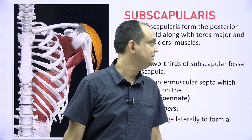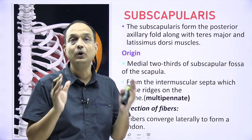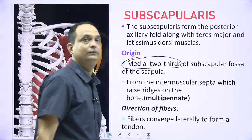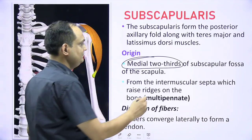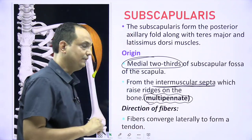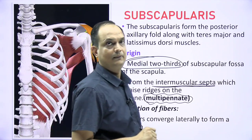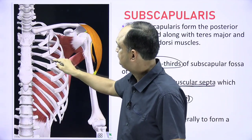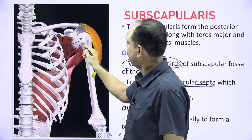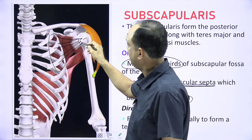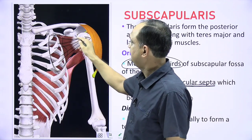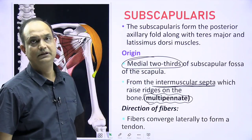The origin of subscapularis comes from the medial two-thirds of the subscapular fossa, and also from the intramuscular septas, which accounts for its multi-pinnate appearance. The fibers diverge laterally and form a tendon, so there is a broad origin and a narrow tendinous insertion, which is why the muscle becomes triangular in shape.